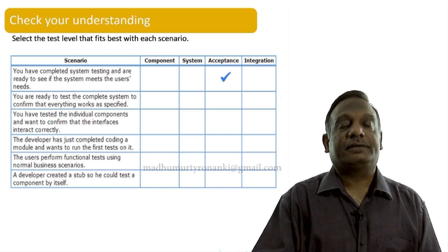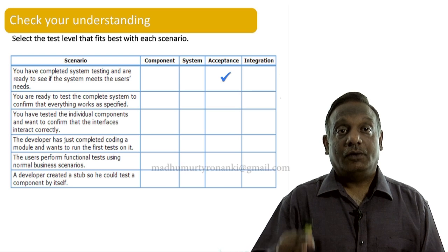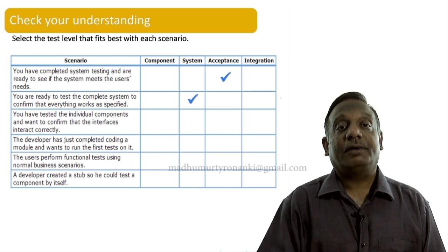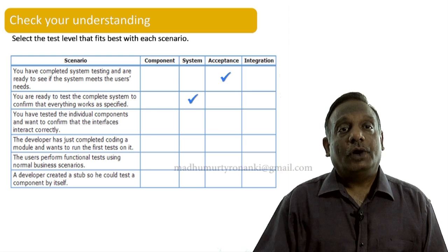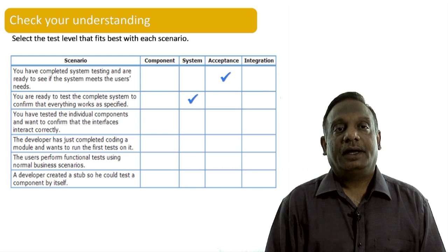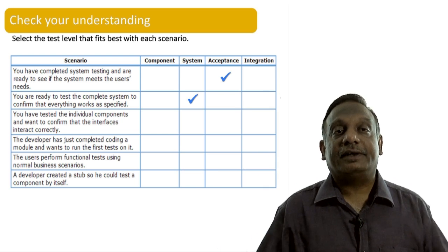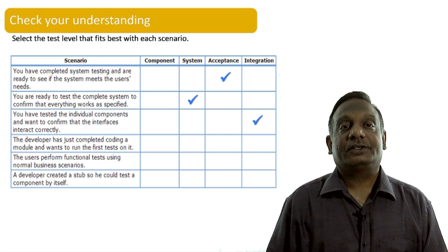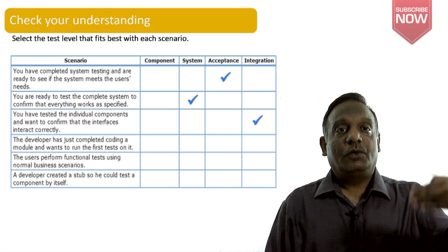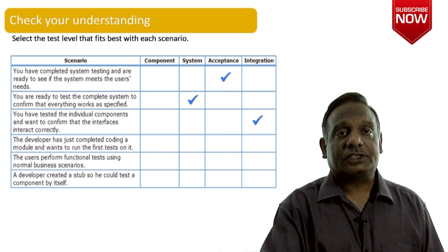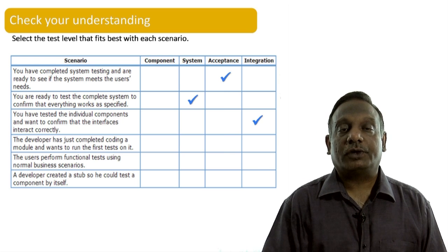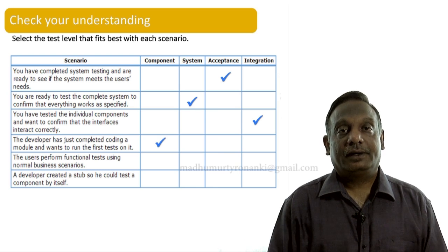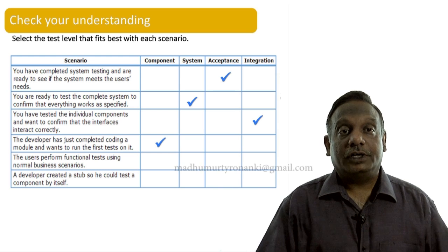Second scenario: you are ready to test the complete system to confirm that everything works as specified. What level of testing? That is system level testing. Third scenario: you have tested the individual components and want to confirm that the interfaces interact correctly. Which level of testing addresses this? That is integration level. Fourth scenario: the developer has just completed coding a module and wants to run the first tests on it. That is component level testing.